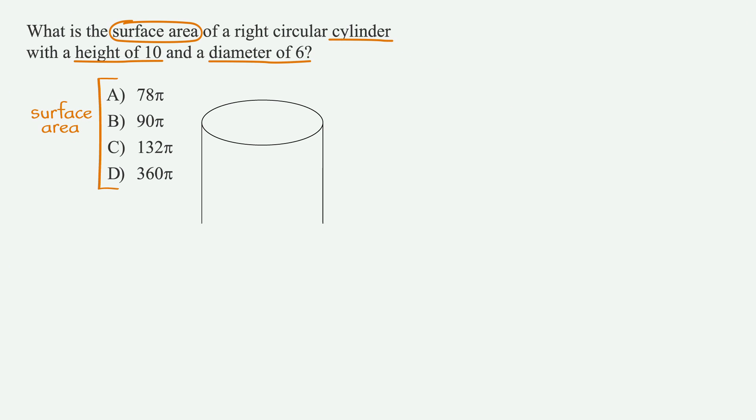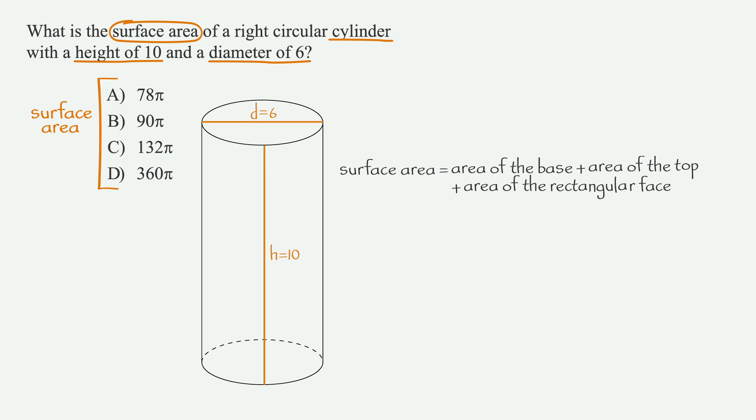We're looking to find the surface area. That means we're looking for the area of the base of the cylinder, the area of the top of the cylinder, and the area of the rectangular face of the cylinder. If we add these three areas, we'll get the surface area. So let's figure out a formula.